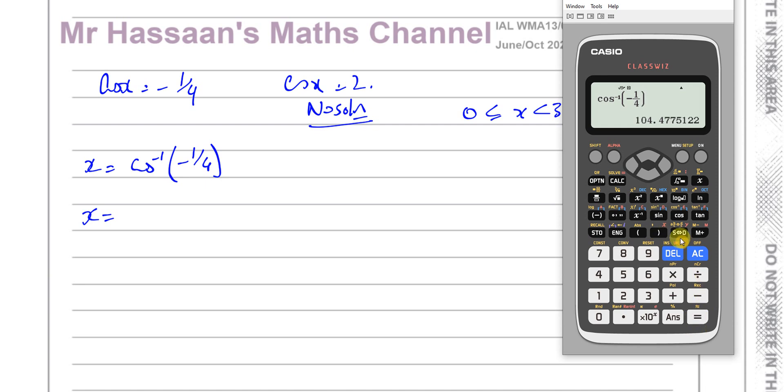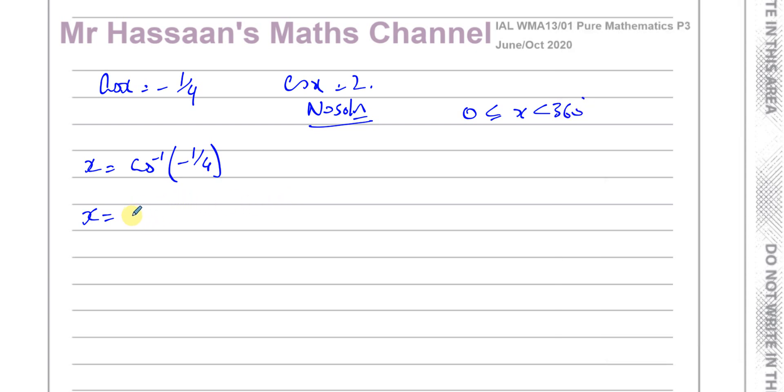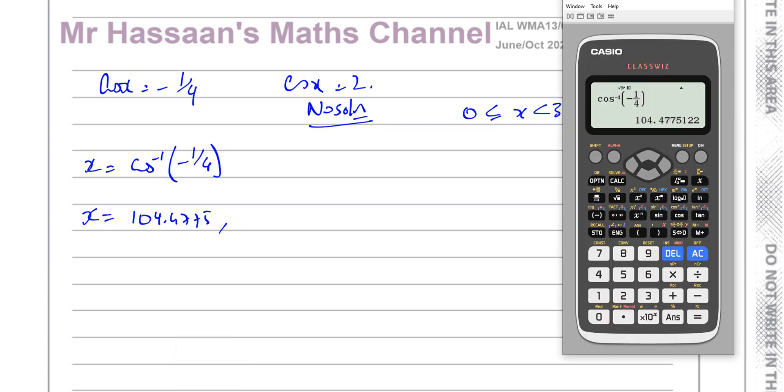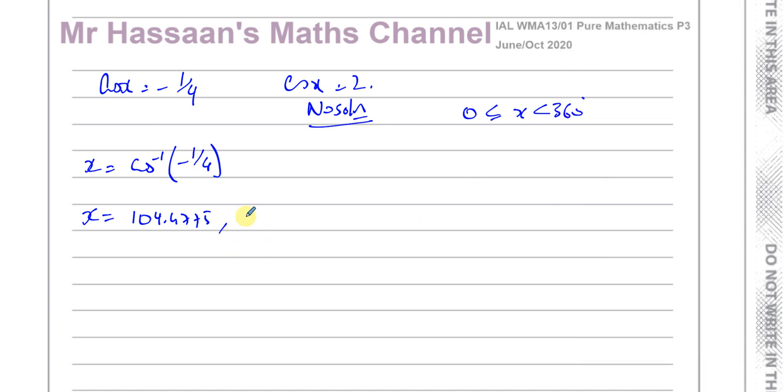Inverse cosine of negative a quarter gives us 104.47775. There's also another angle which shares the same cosine ratio as this which is 360 minus this angle, so 360 minus our answer will give us the other angle.